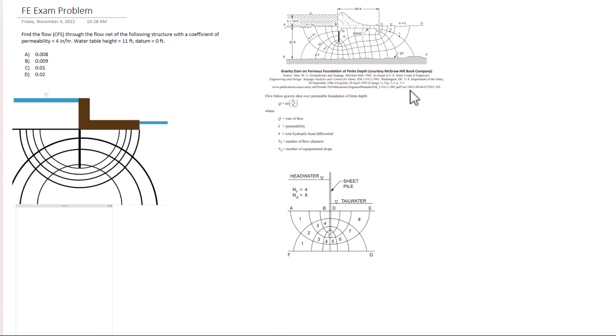For flow nets we don't have Q yet, so Q equals K, which is four inches per hour (we're going to have to do a conversion on that), and the water table height is 11 feet. The datum's at zero so we can just go with 11 there, multiplied by nf over the number of drops - that's our ratio.